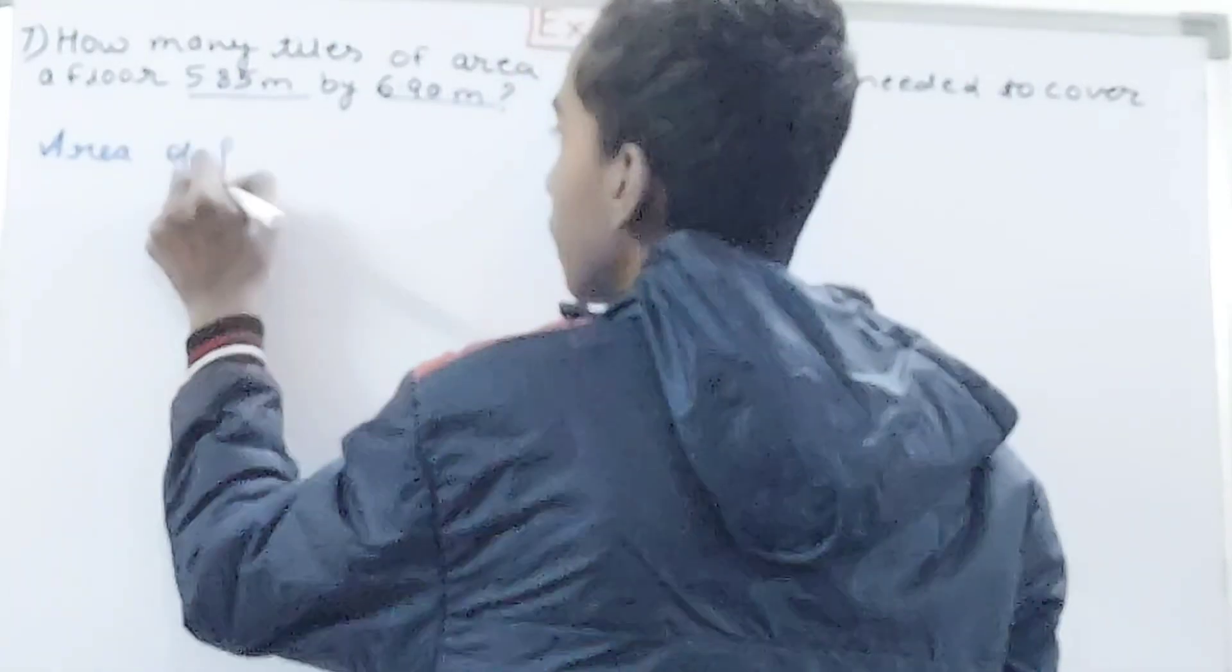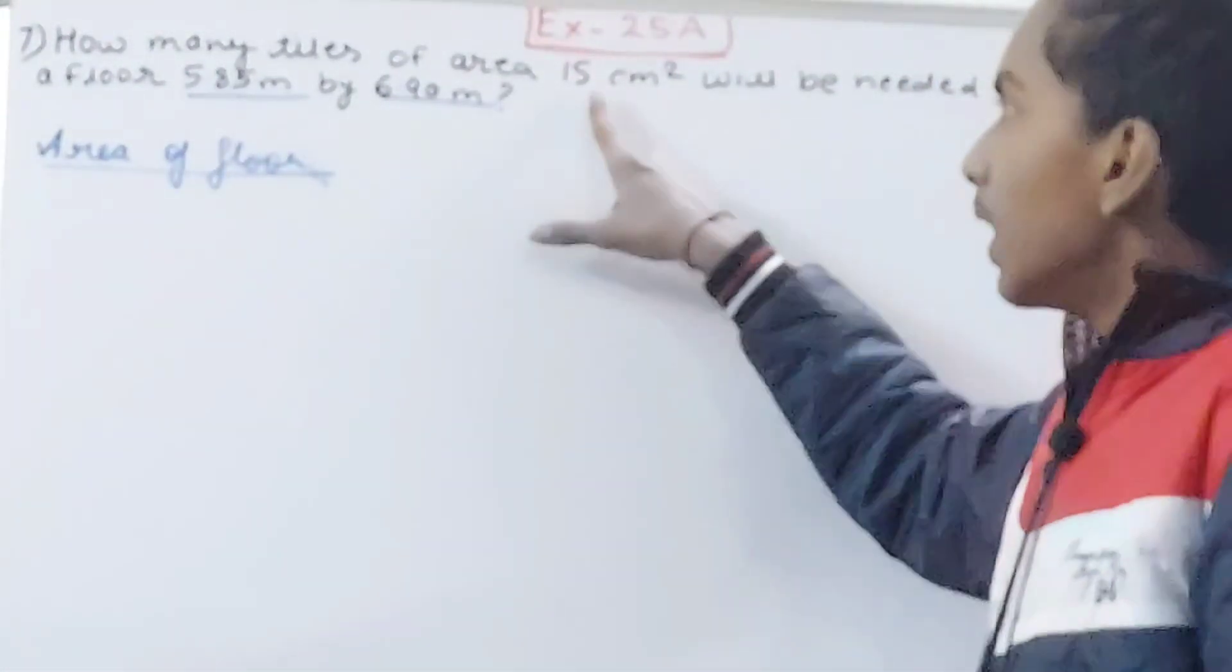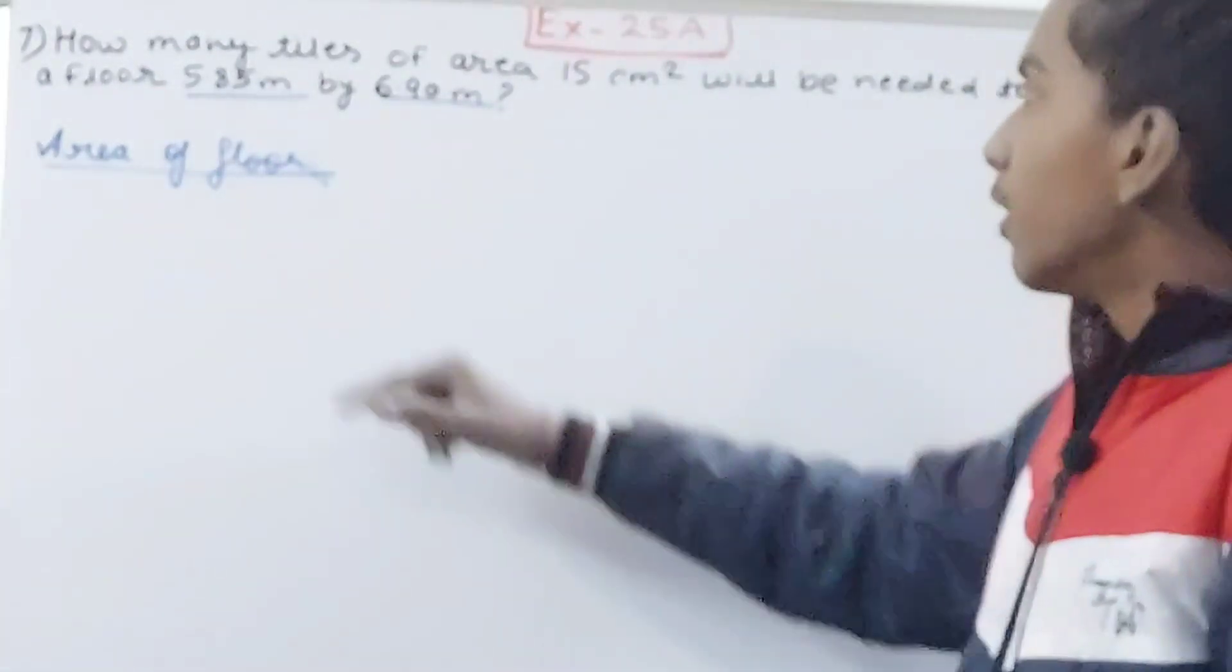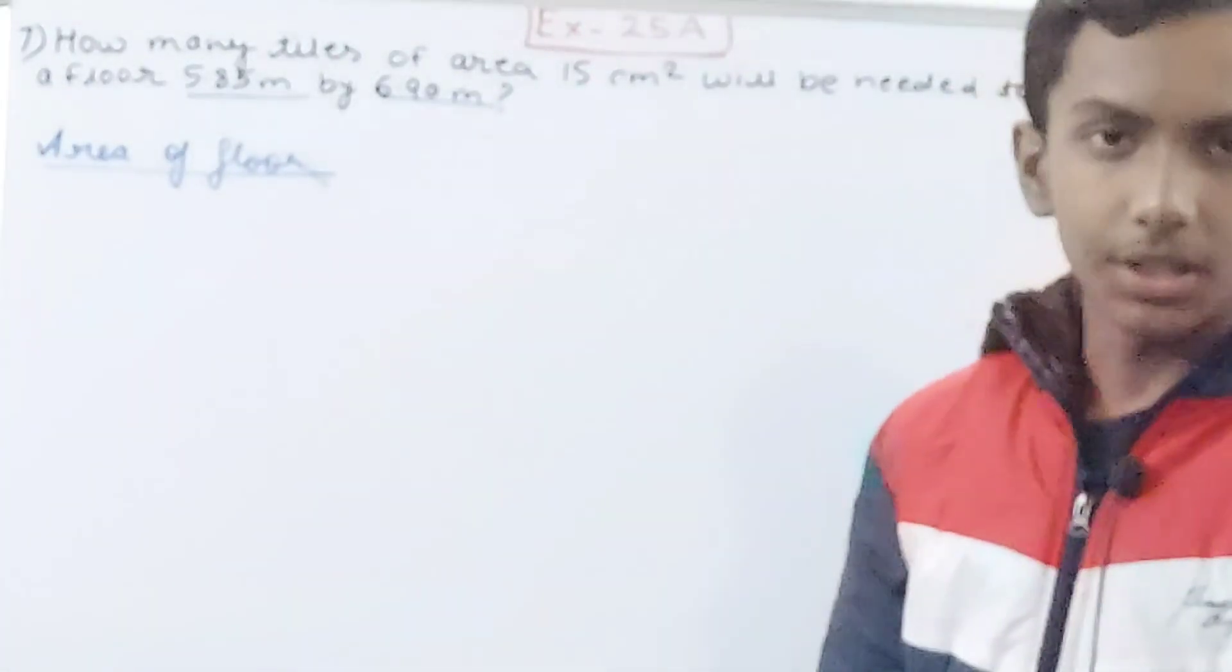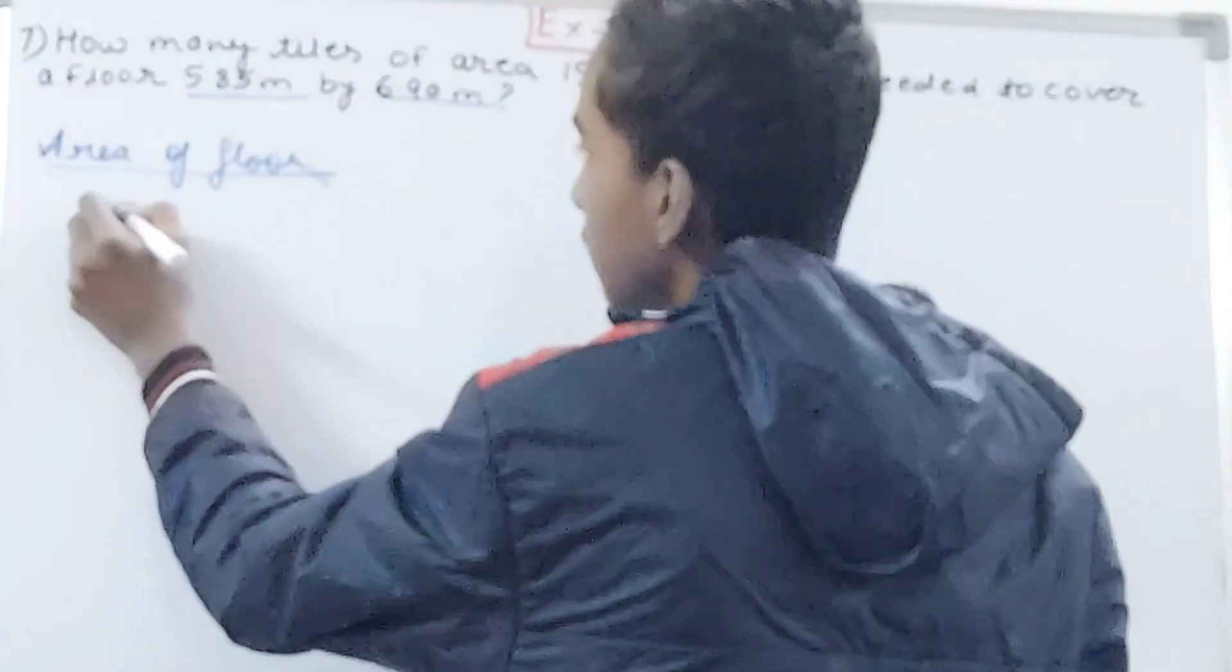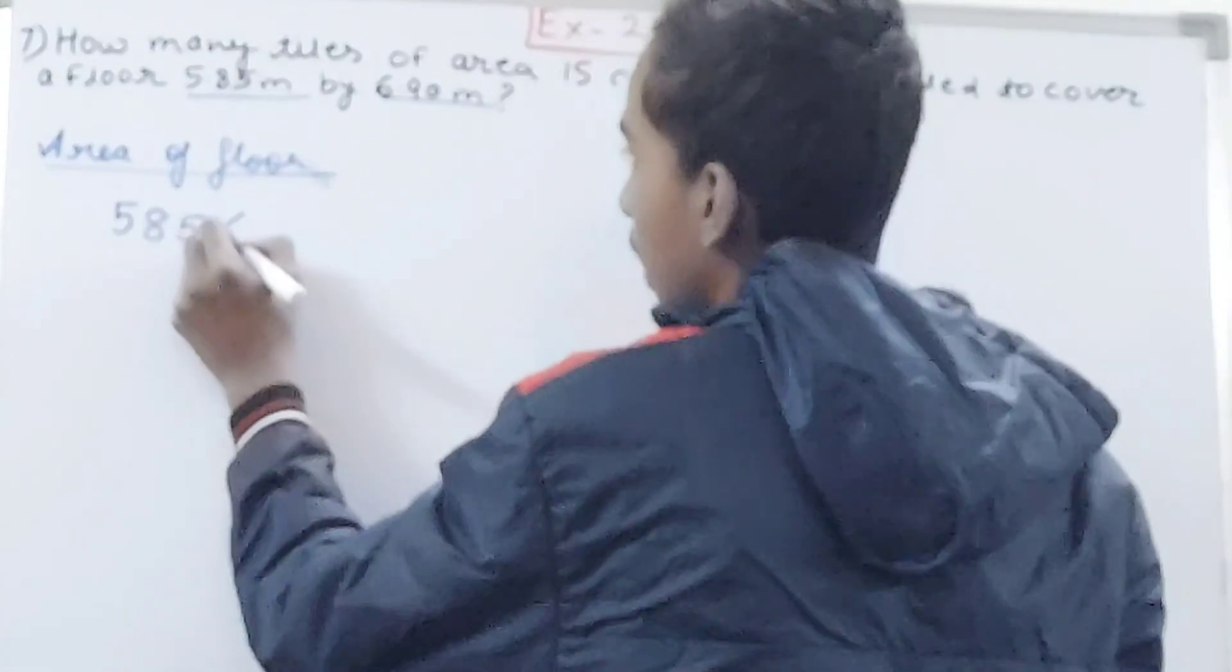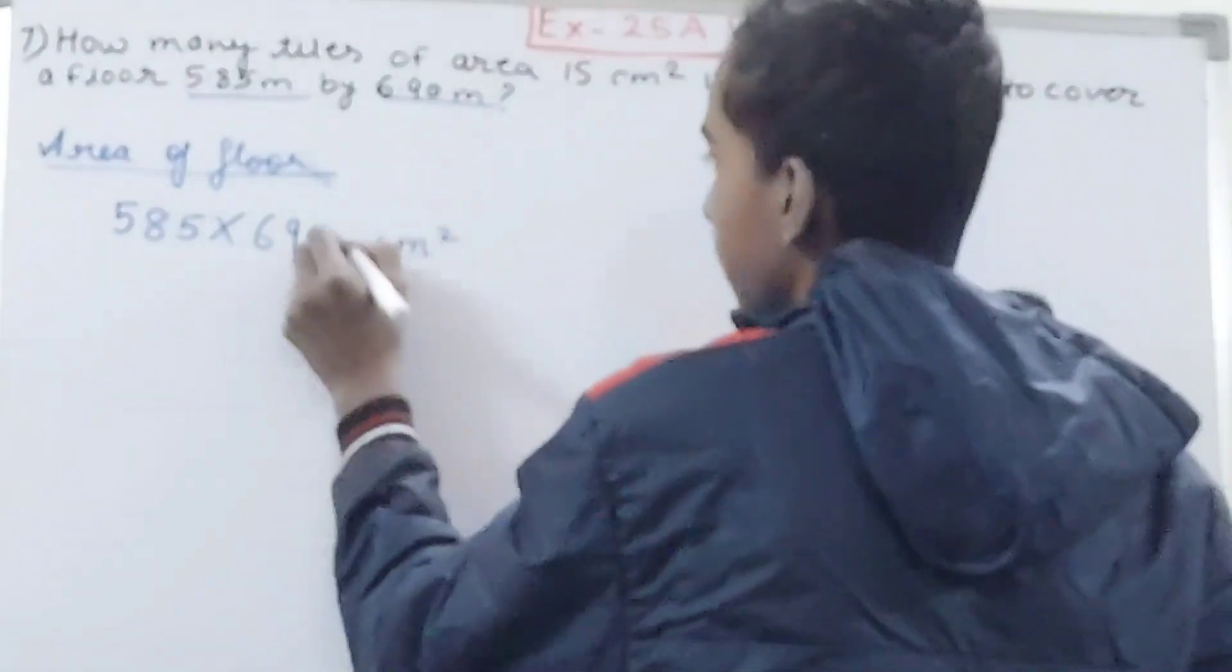Area of floor - I want the area in centimeters. Why in centimeters? Because you can see the area of one tile is 15 square centimeters, and the floor dimensions are given in meters. I want to convert these into a single unit, so we will convert them to centimeters. 5.85 meters will become 585 centimeters into 690 centimeters. Square centimeters.